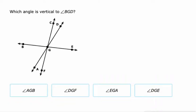Vertical angles. BGD. So BGD. Right there. And so it's formed by line DA and line BE. Okay. So the one vertical to that would be this angle right here. And they are congruent. And that's EGA. There it is. EGA or AGE. EGA.